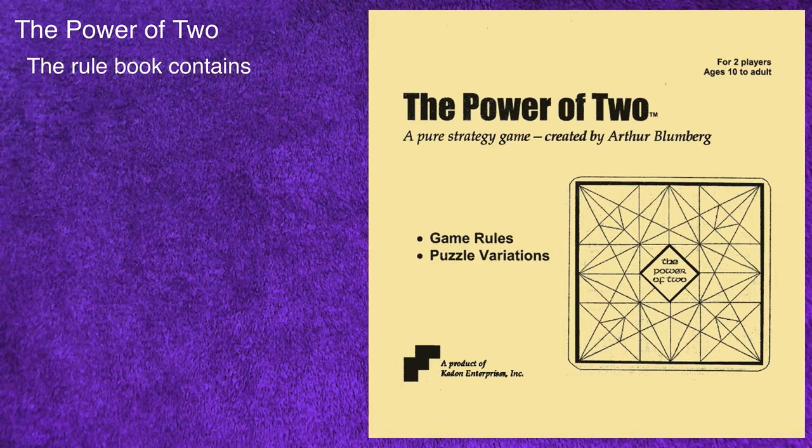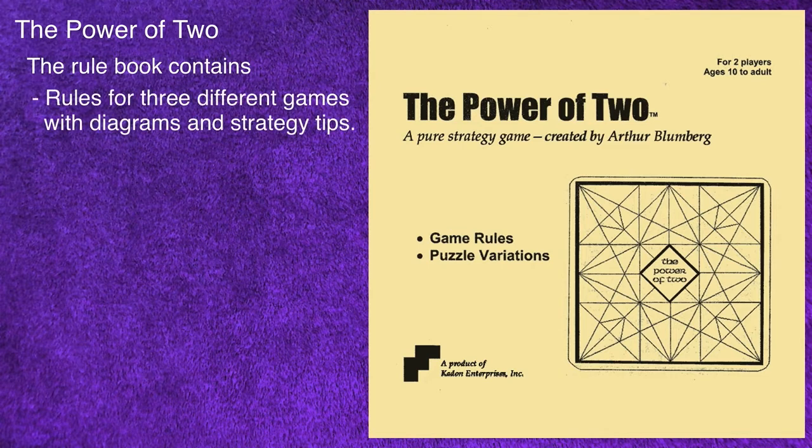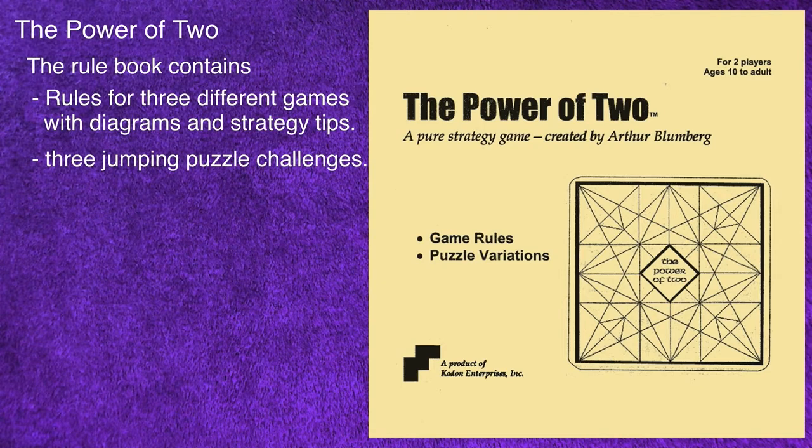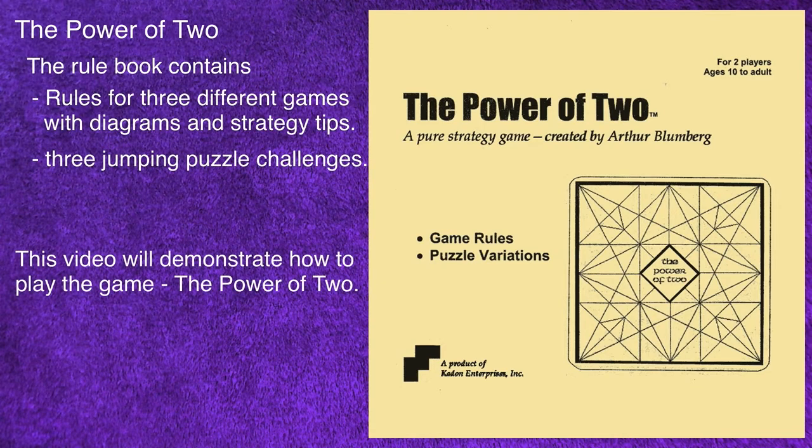The rulebook contains descriptions of three different games with diagrams and strategy hints, as well as three different jumping puzzles. This video will demonstrate how to play the primary game, The Power of Two.